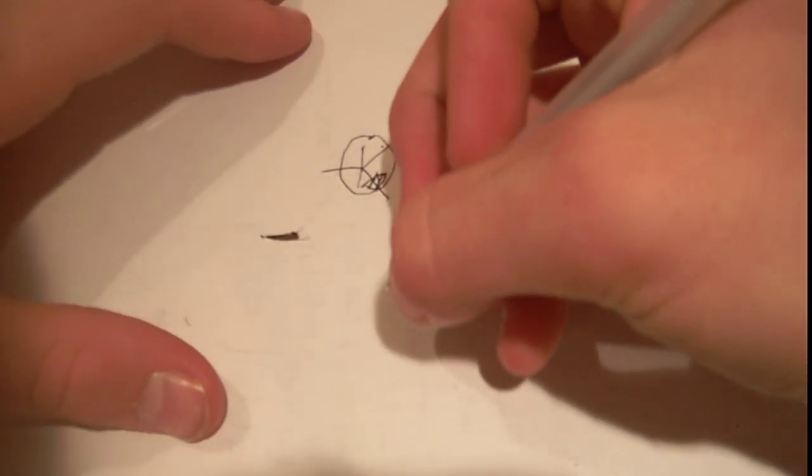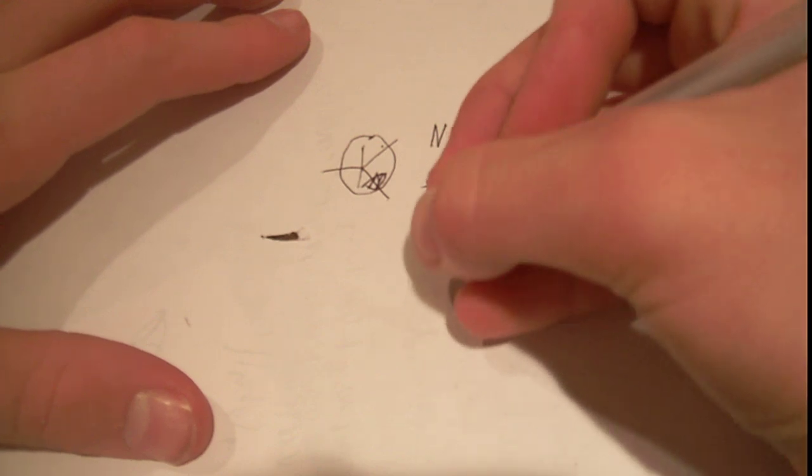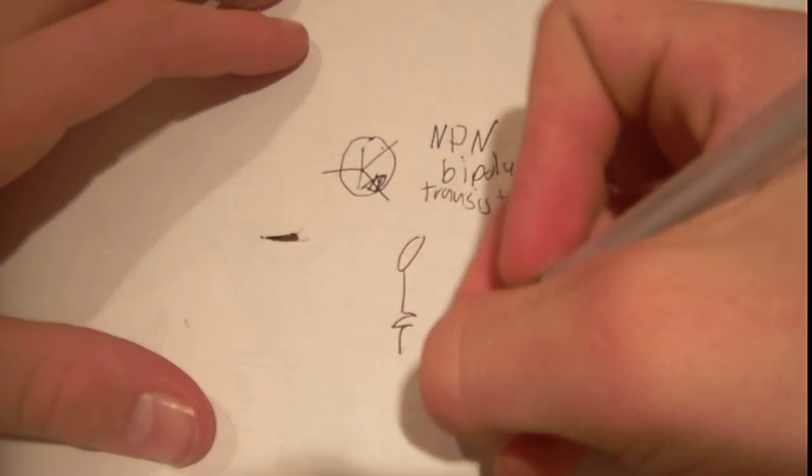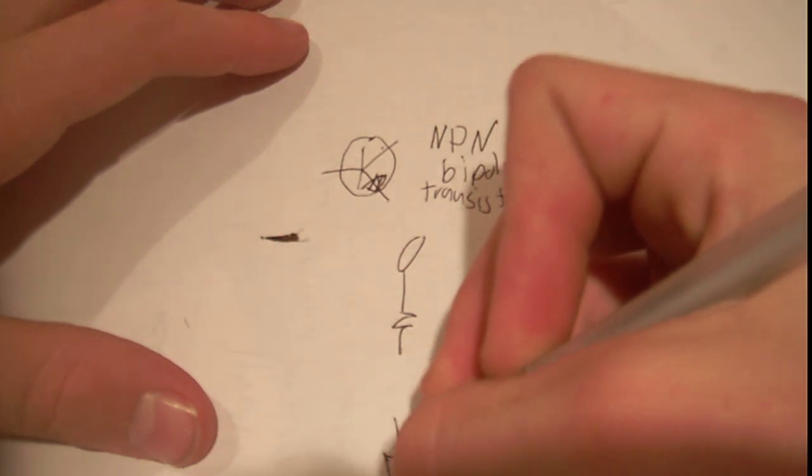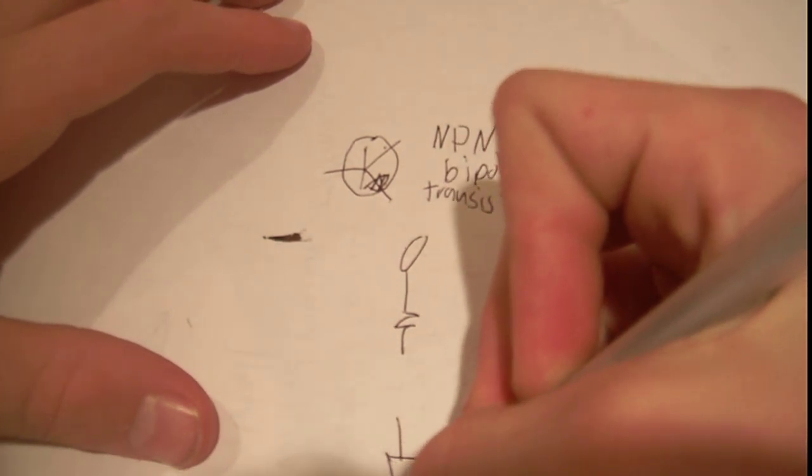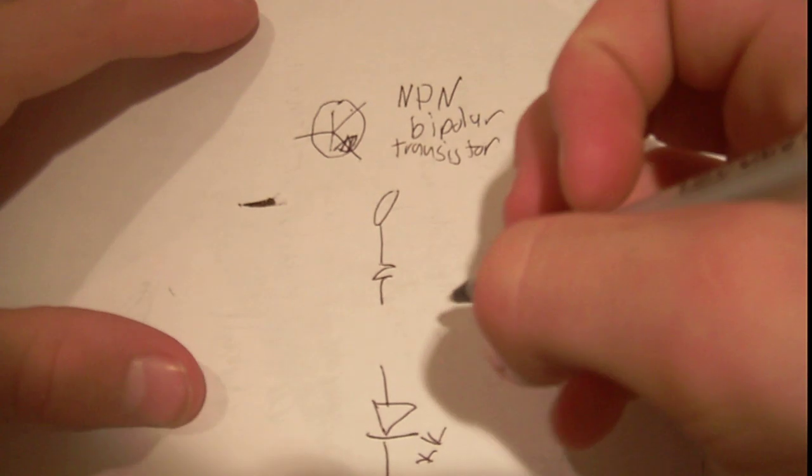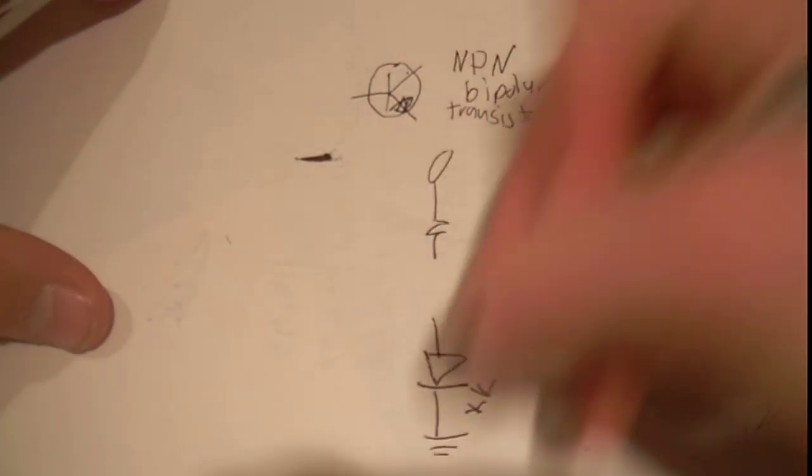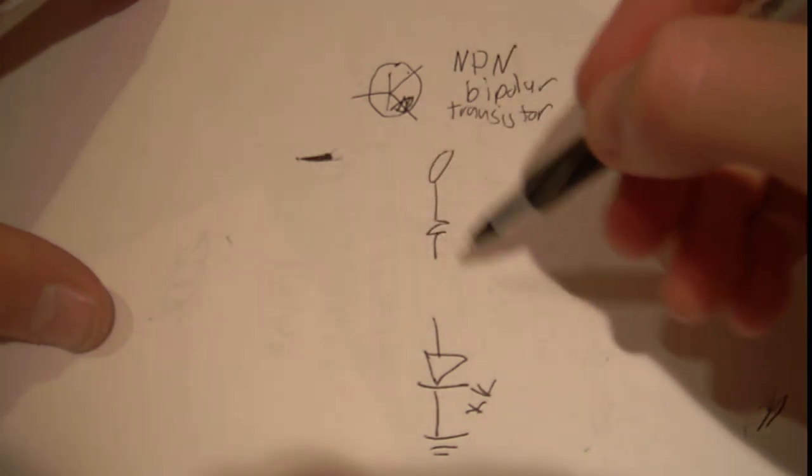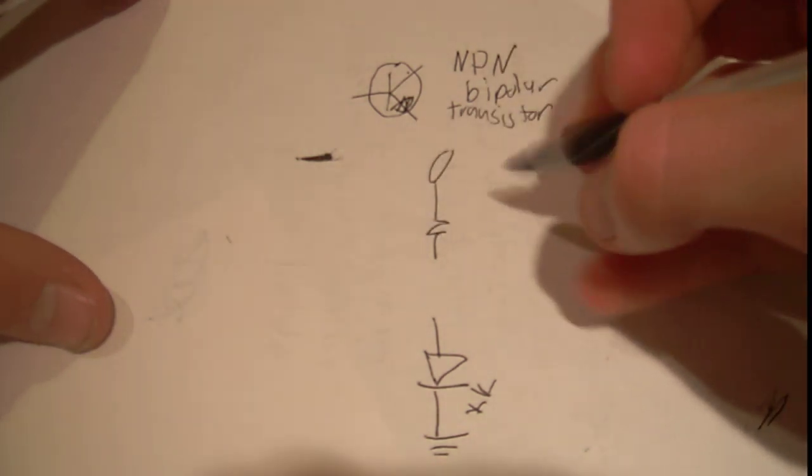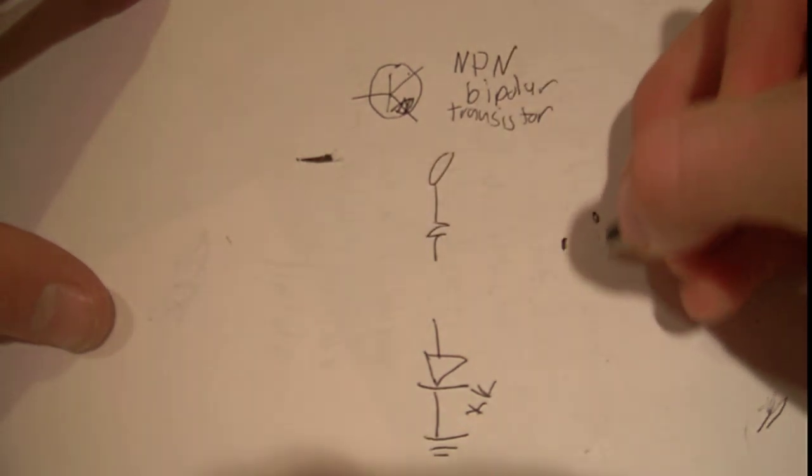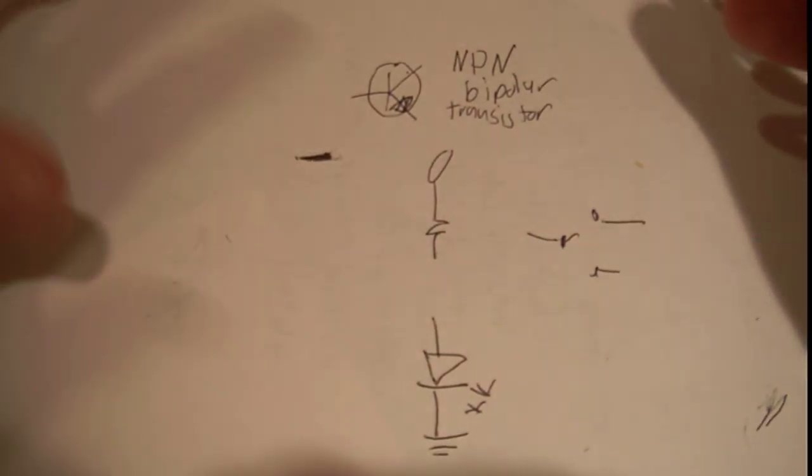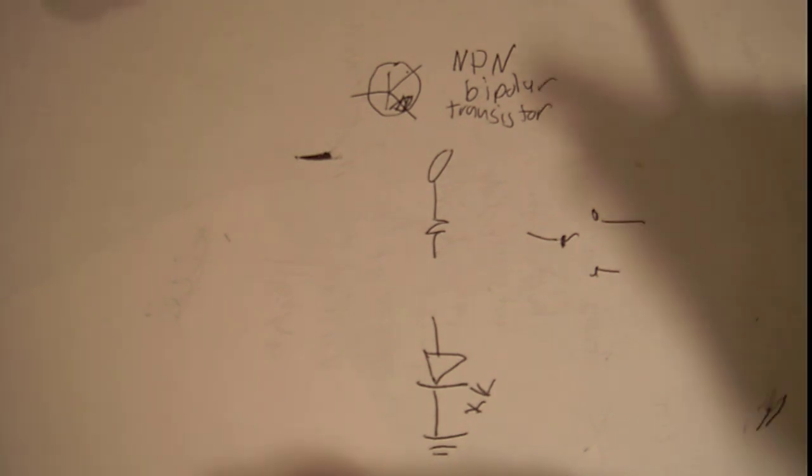So the way a transistor works is, say you got a signal, say your signal is just some voltage through a resistor and an LED, and say it's going right to ground. And you don't want to just connect this and have like a physical switch, because you don't want to manually do it. So you want your microcontroller to do it.